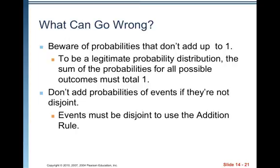Don't add probabilities of events if they're not disjoint. We'll talk about how to adjust for that in chapter 15. Events must be disjoint to use the addition rule from this chapter.